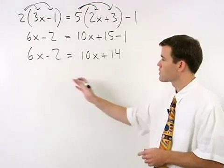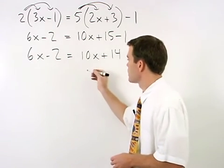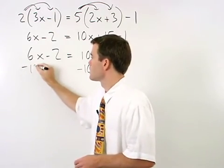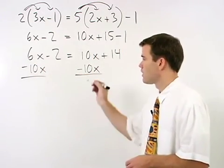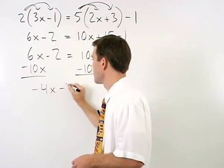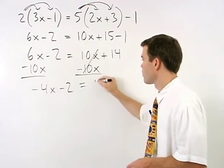Moving our variables to the left and numbers to the right, we start by subtracting 10x from both sides. On the left we get negative 4x minus 2 and on the right we get 14.